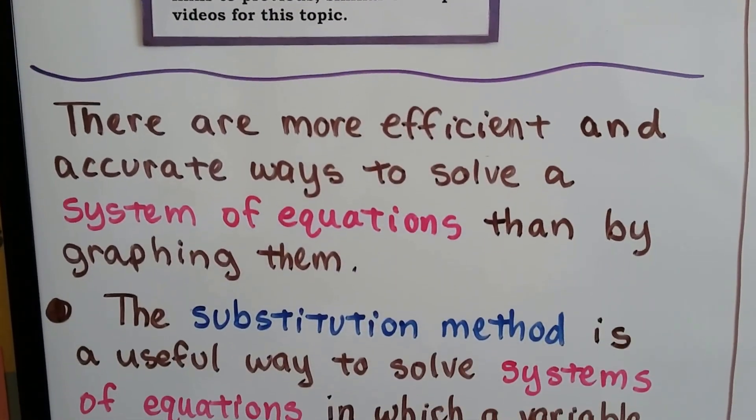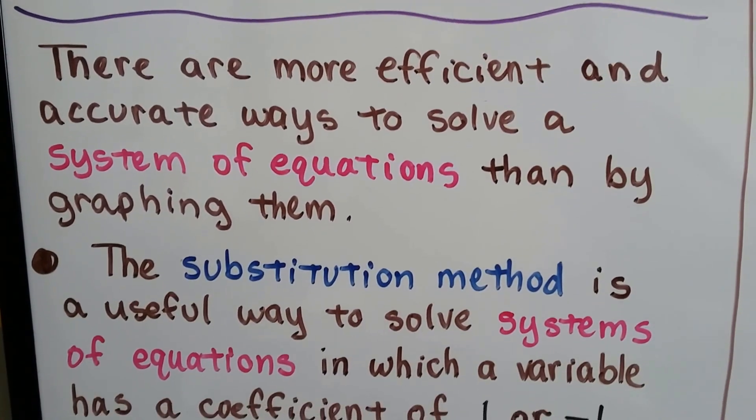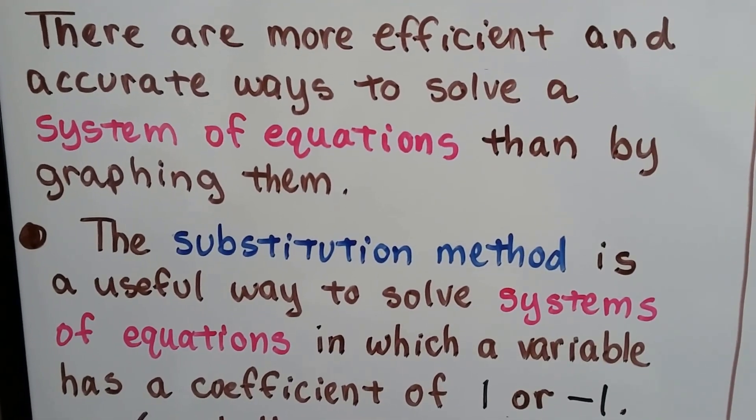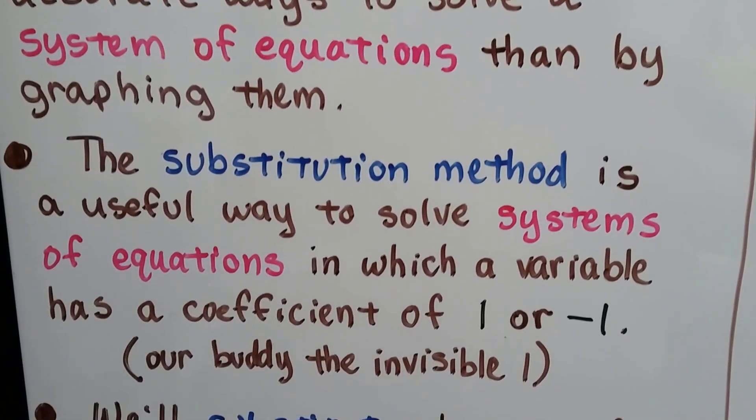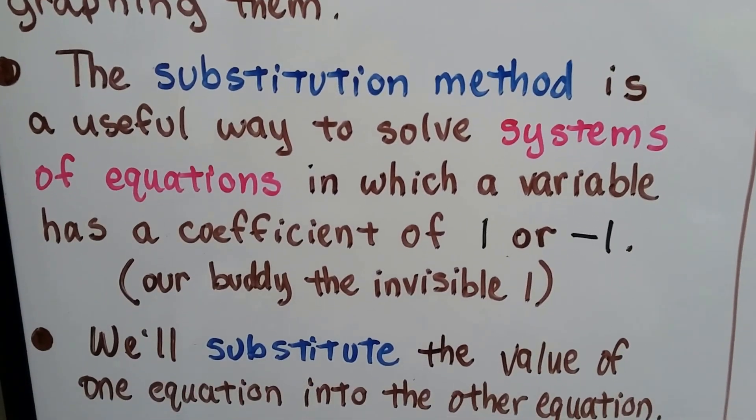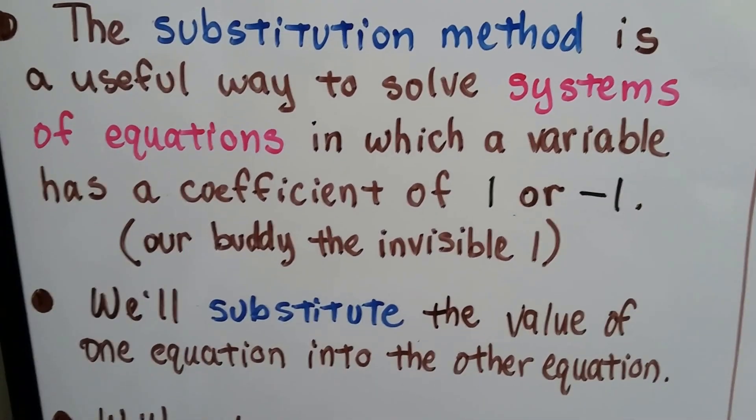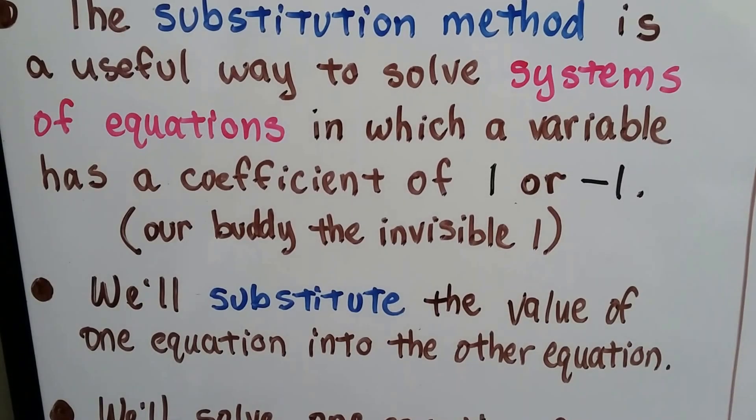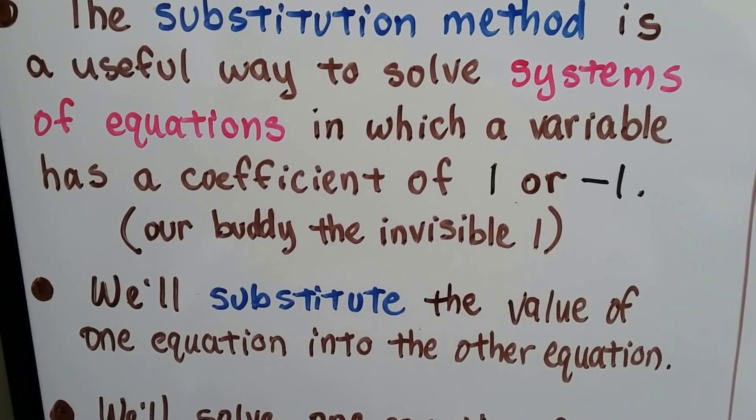So there are some more efficient and accurate ways to solve a system of equations than by graphing them like we did in the last video. The Substitution Method is a useful way to solve systems of equations in which a variable has a coefficient of one, or negative one, you know, our buddy, the invisible one.